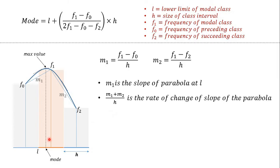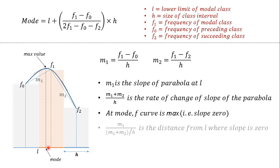Now at mode, the tangent is flat, which means slope is 0. And since tangent at L is M1 and tangent at mode is 0, the distance we have to move to get to the mode is equal to M1, which is change of slope that we get as we move from L to mode,